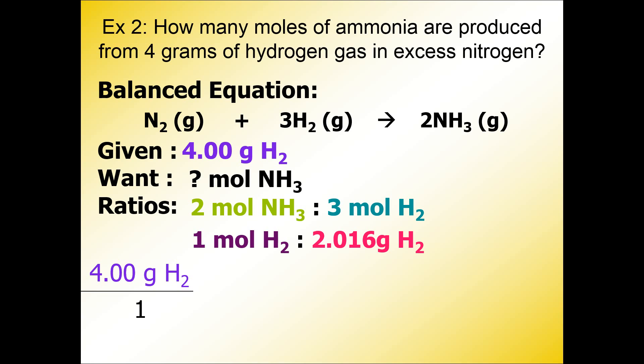where we start with our given over 1 with the problem. Now the given has a unit and a substance, and it's going to guide us through the rest of our problem. So we're going to take that grams of H2, and we're going to look for another mass unit, grams of H2, in the ratios. And we're going to put this value diagonal from the given.